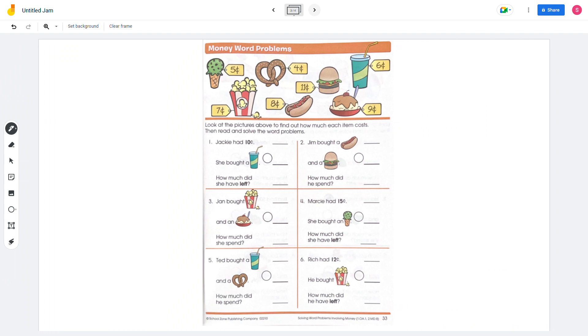On the next page, look at the pictures above to find out how much each item costs, then read and solve the word problems. Jackie had 10 cents. She bought a soda. How much did she have left? So she has 10 cents, and she bought a soda which is 6 cents. 10 minus 6 equals 4. So she left with 4 cents.